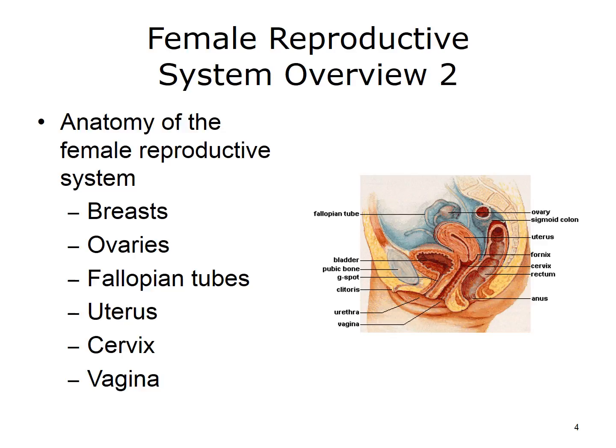The uterus is the major female reproductive organ. It is a pear-shaped muscular organ. Its main function is to receive a fertilized ovum, which becomes an embryo and implants into the endometrium. The endometrium is the inside lining of the uterus, which provides the nutritional and protective support for the fetus to develop and grow.